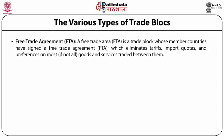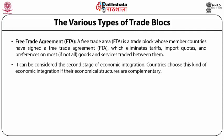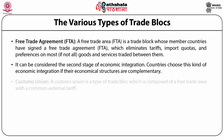A free trade area or agreement (FTA) eliminates all trade restrictions between members of the trade bloc but each member maintains its own restrictions on trade with third countries. If people are also free to move between the countries in addition to the FTA, it would also be considered an open border. It can be considered the second stage of economic integration. Countries choose this kind of integration if their economic structures are complementary; if their structures are competitive, they are more likely to form a customs union.